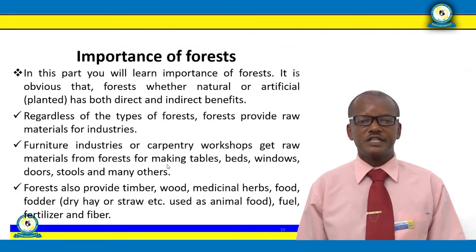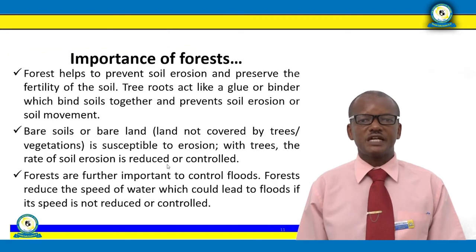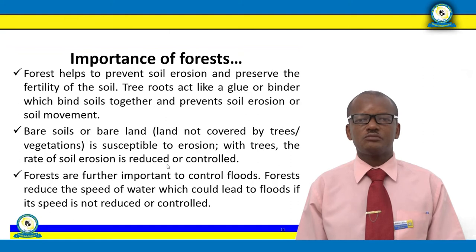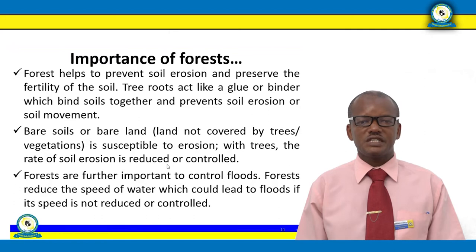Forests help to prevent soil erosion and preserve the fertility of the soil. The roots of the trees act like a glue or binder which binds soil together and prevents soil erosion or soil movement. In most parts of the world, we are experiencing soil erosion because of the removal of forests. Forests also reduce the speed of movement of topsoil. Bare land not covered by trees is susceptible to erosion; with trees, the rate of erosion is reduced or controlled.